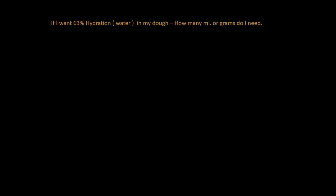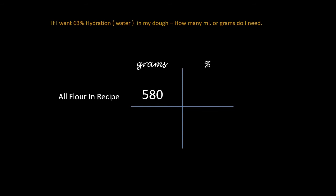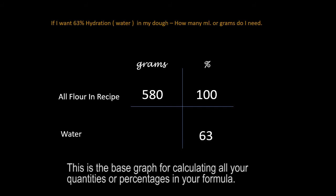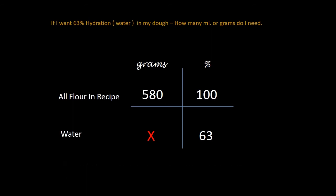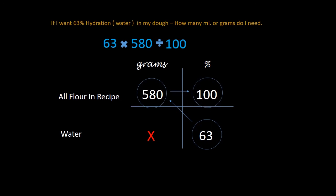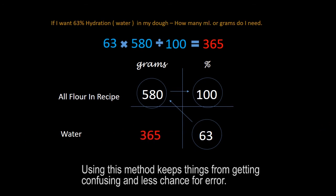Now if you want a 63 percent hydration dough, set up your graph with grams on one side and percentage on the other. We base everything on flour — in this example we have 580 grams of flour, which is 100 percent. On the water side we want 63 percent, and x is our unknown grams of water. The calculation is simple: 63 times 580 divided by 100. You can see the flow — 63, 580, 100 — and the answer is 365 grams. That is our 63 percent water.